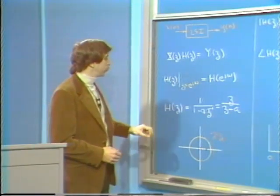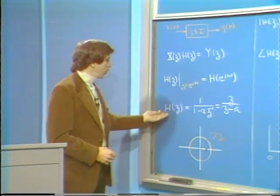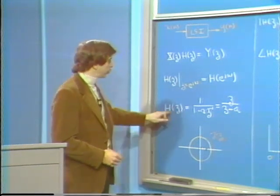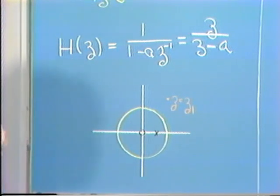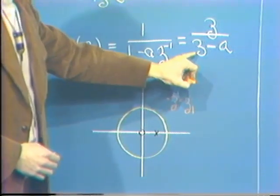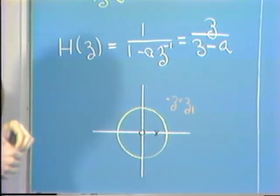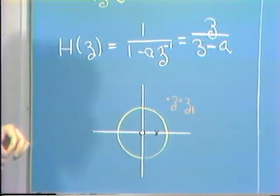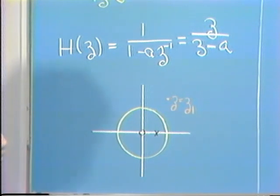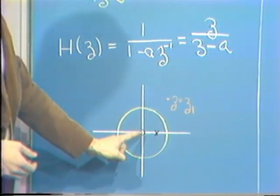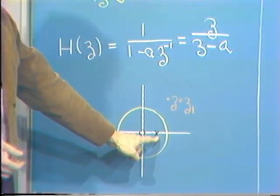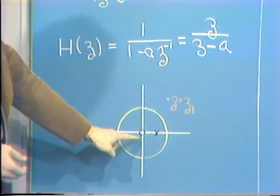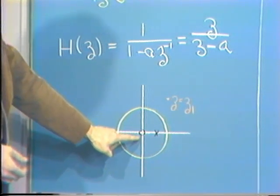In terms of a simple example, the system function is 1 over 1 minus a z to the minus 1, or z divided by z minus a. In the Z-plane, this has one pole at z equals a and one zero at z equals 0. To get the frequency response, we want to look at the Z-transform evaluated on the unit circle.